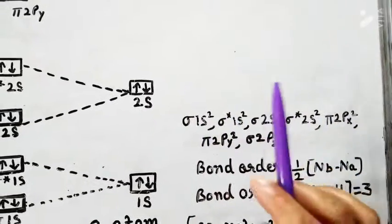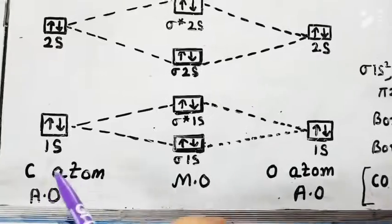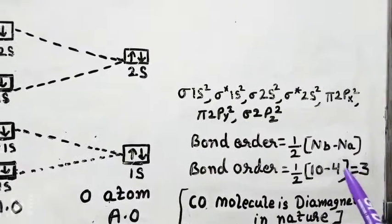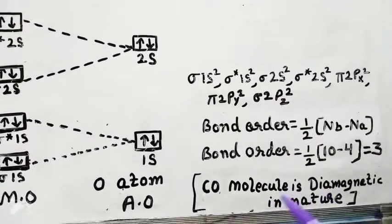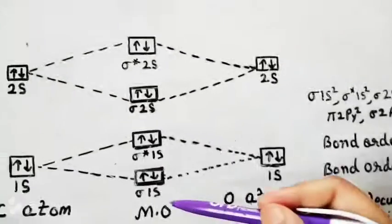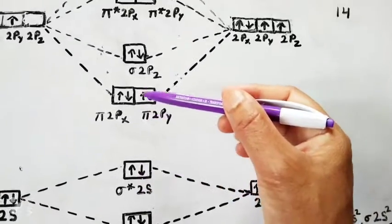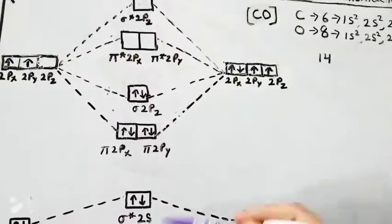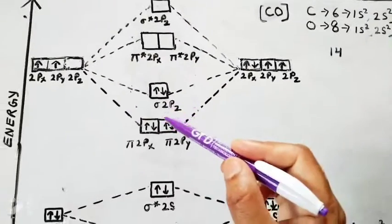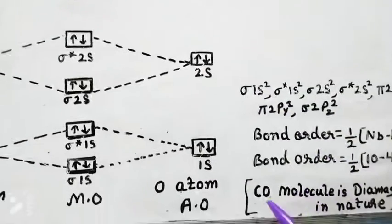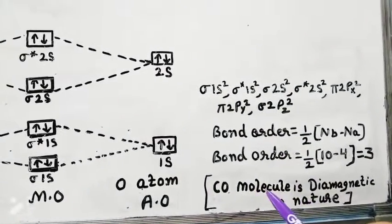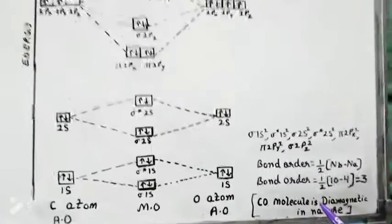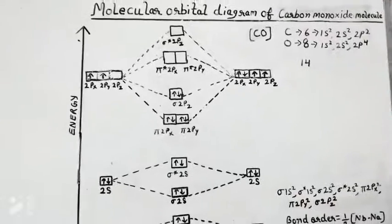This means that between the carbon and oxygen atoms, three covalent bonds are present. Now we will see whether the molecule is diamagnetic or paramagnetic. Looking at the molecular orbital diagram, all the molecular orbitals have paired electrons — no unpaired electrons are present. Therefore, the carbon monoxide molecule is diamagnetic in nature. So this topic is completed, thank you.